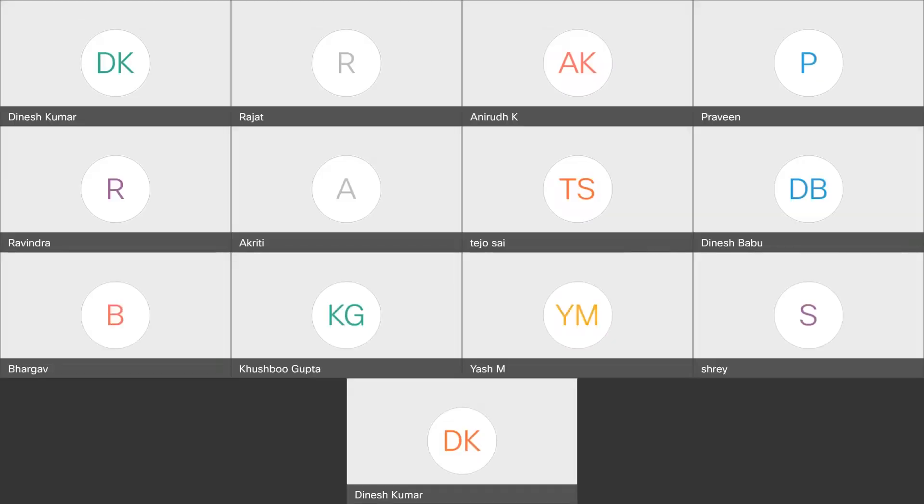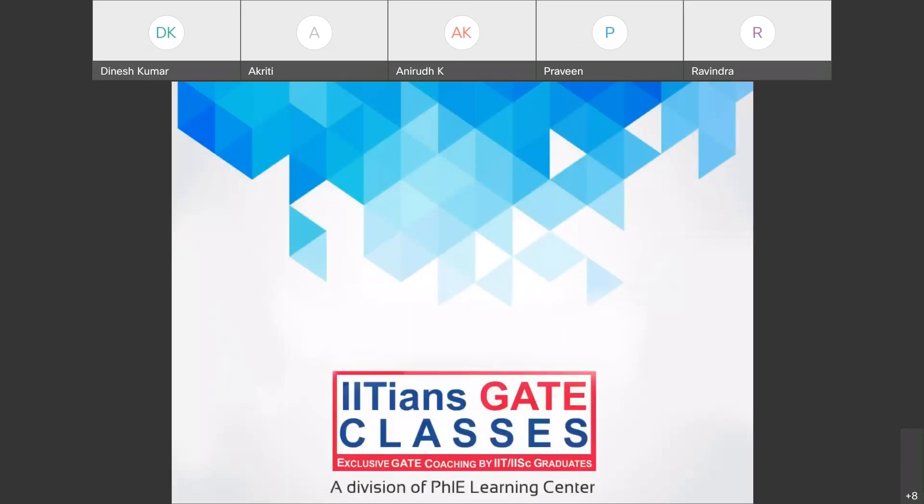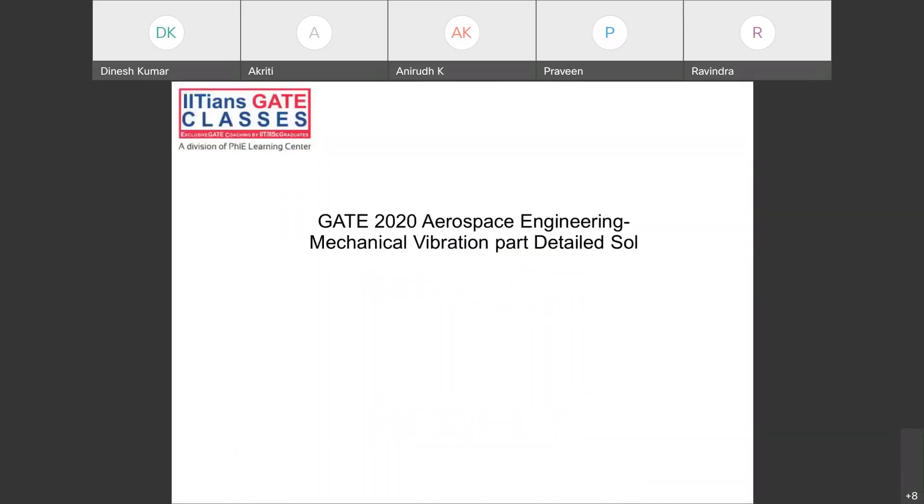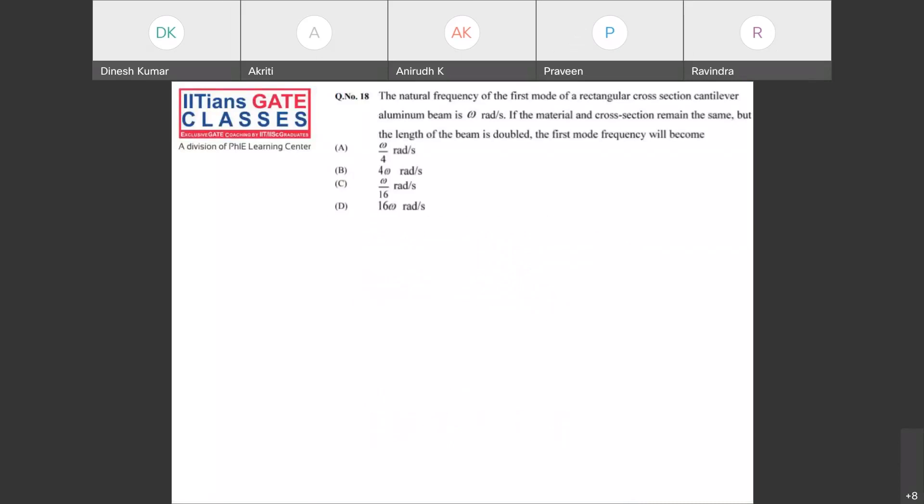So guys, if you look in vibration for GATE 2020, there are three questions - question number 16, 18. This question number 18 is similar to the GATE 2021 question we did yesterday because that question was also a cantilever beam continuous vibration problem.